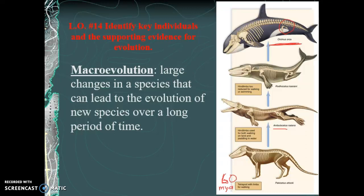Over millions and millions more years, this species gives rise to Rhodocetus. They're a lot more aquatic — the front limbs elongate and the fingers widen to become more of a flipper. The hind limbs are used much less because most time is spent in the water. Think of a seal: primarily aquatic but can come out on land, still having those back flipper limbs. Then fast-forwarding another 10 to 15 million years, we get to the completely aquatic orca, which lives entirely in the water.